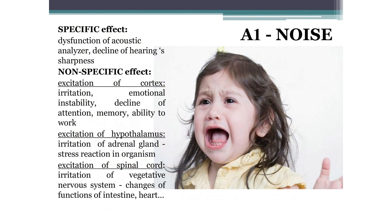The effects of noise exposure can be divided into specific and nonspecific. Specific effects include dysfunction of the acoustic analyzer and decreased hearing acuity. For the relatively low noise levels found in hospitals, nonspecific effects are more characteristic: excitation of areas of the cerebral cortex leading to irritation, emotional instability, decreased attention, memory, and ability to work. Noise also causes excitation in the hypothalamus, leading to increased adrenaline levels and a stress reaction. Arousal can be transmitted to the spinal cord, disrupting the autonomic nervous system. A person working at high noise levels has increased risk of gastritis, heart attack, and hypertension.